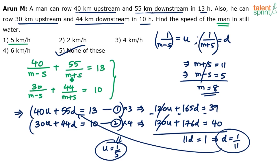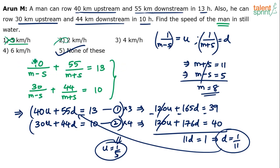If m = 5, then s = 0, which is not possible. So s should be 6, but then m − s = 5 − 6 is negative — also not possible. So option 1 (m = 5) is incorrect. Similarly for option 2 (m = 2): m + s would be 5, giving 55/5 = 11, but m − s = 2 − 3 would be negative — also not possible.